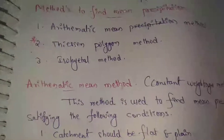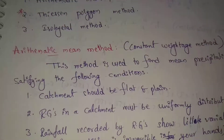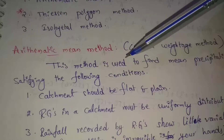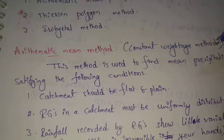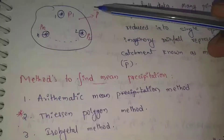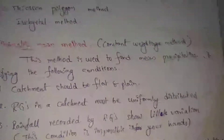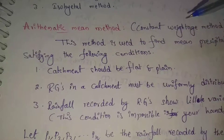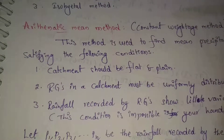The first method is the arithmetic mean method. This method is used to find mean precipitation, P bar.